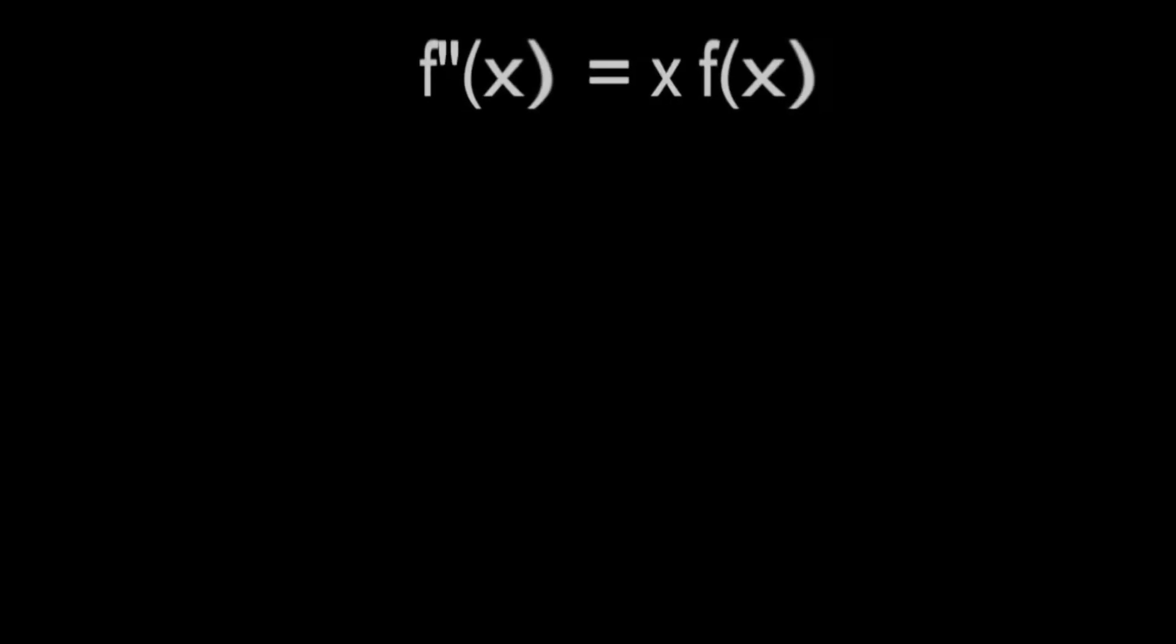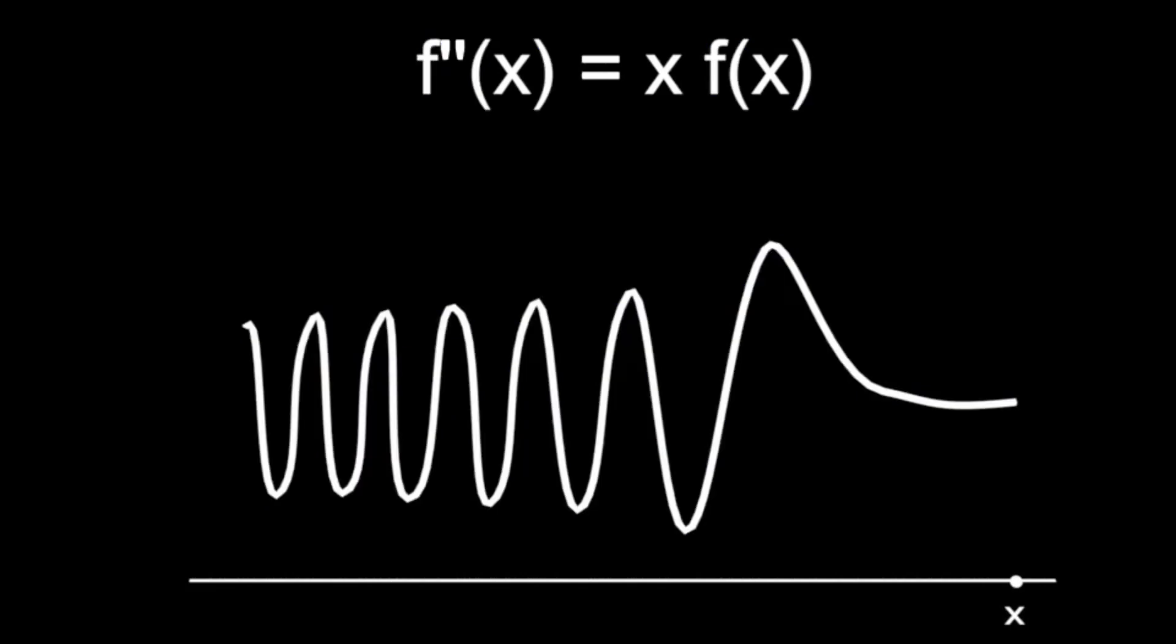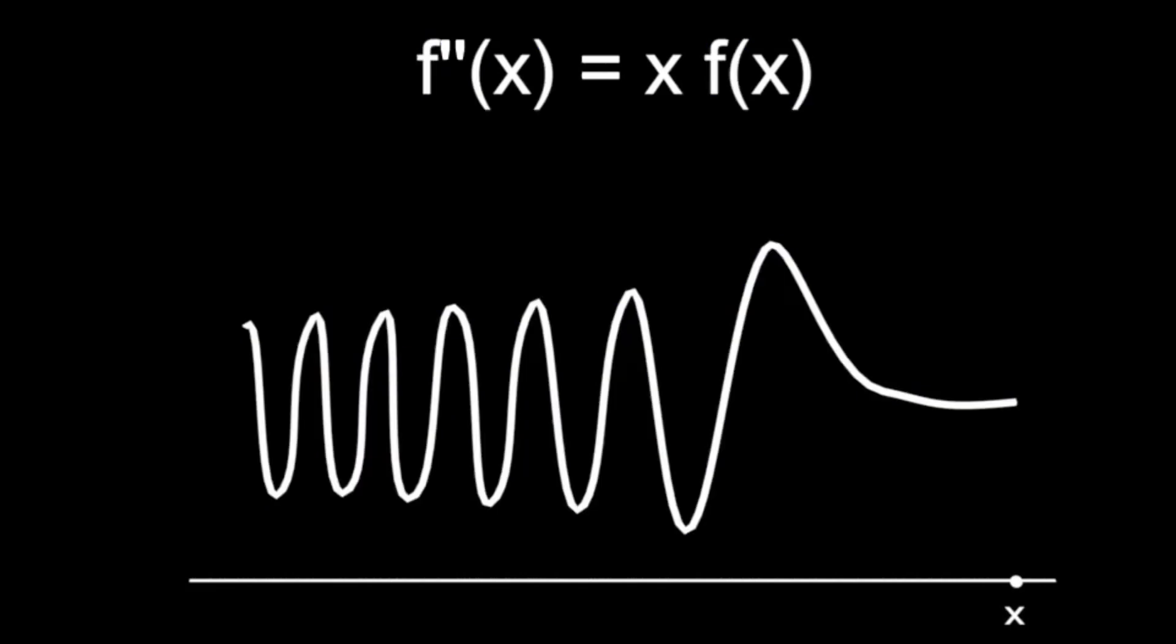Returning to the Airy equation as mathematicians, for us now, x, which we call the variable, represents any number, and we visualize it as a point on the continuous number line. f of x represents a function of the variable x. It is a quantity which can change if x changes. Then the Airy equation says that the second derivative of f of x, in other words, the rate of change of the rate of change, is proportional to the function f of x itself.